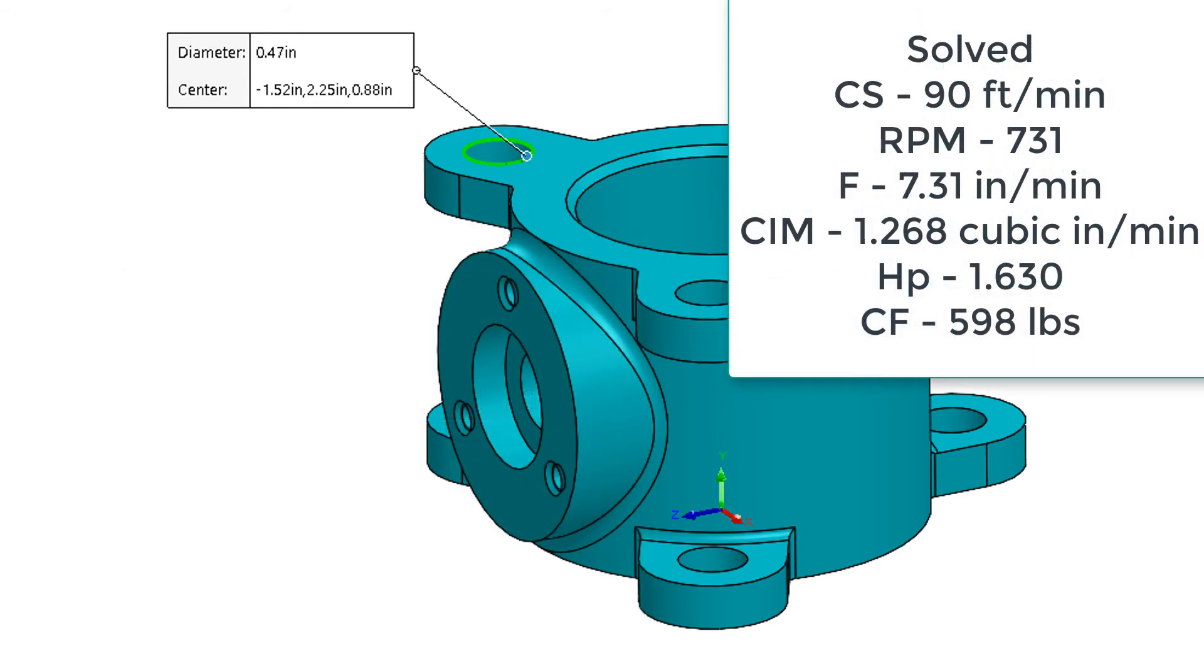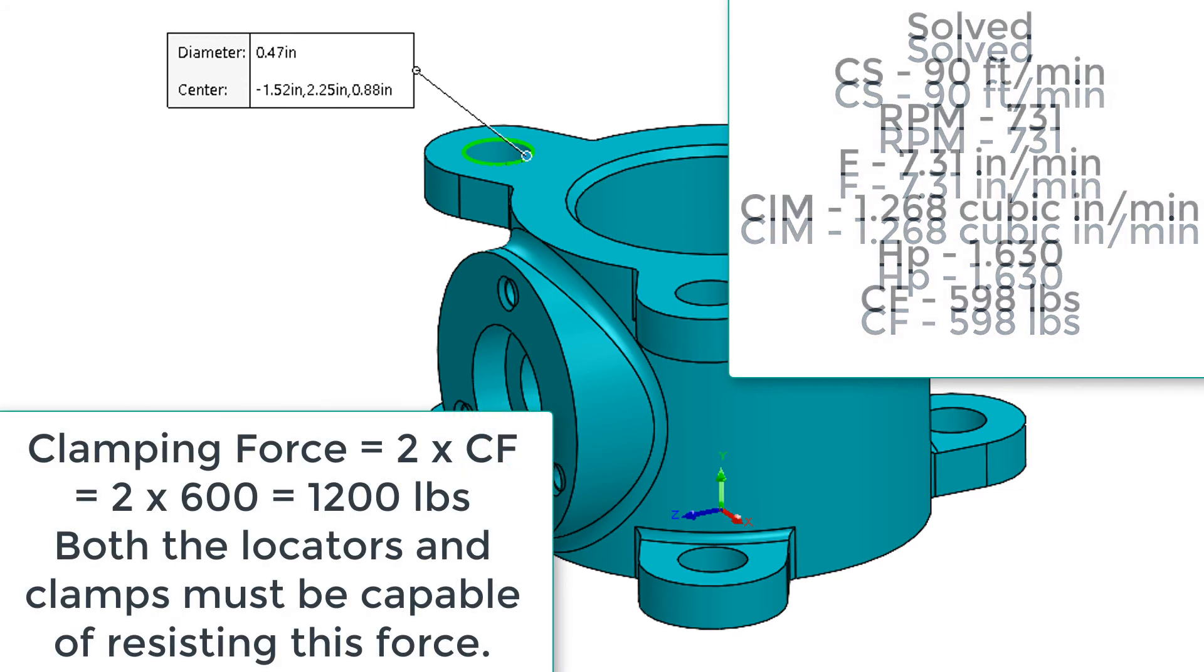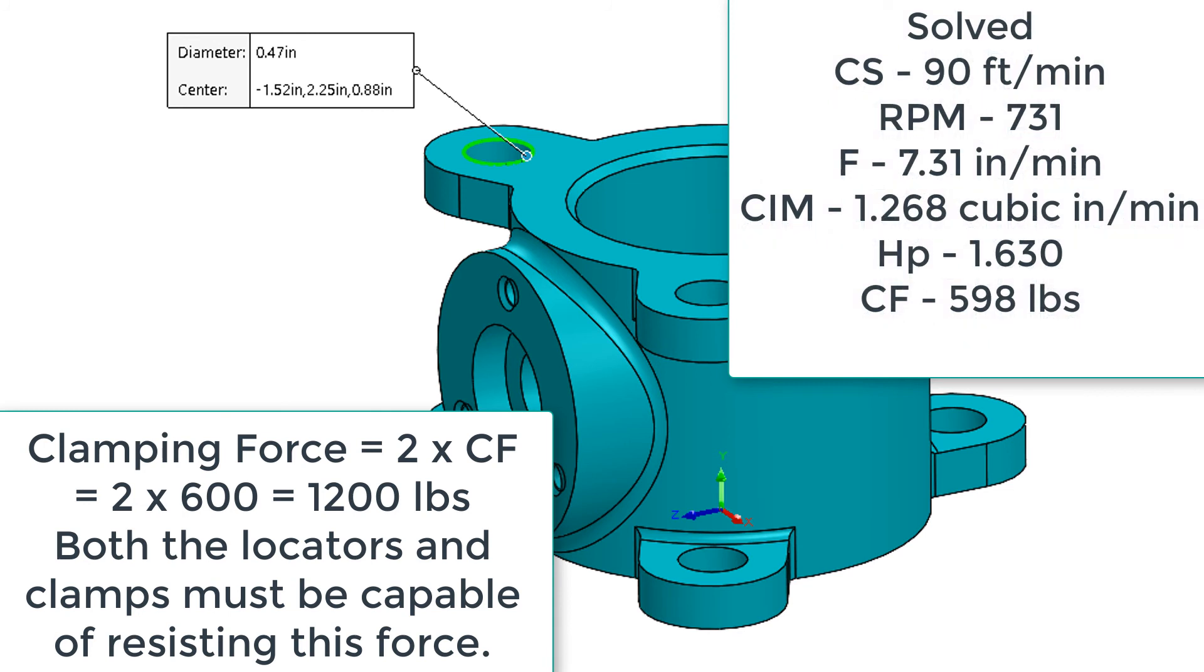Now that we know using our cutting parameters that one drill will exert a cutting force of 598 pounds, I can design my clamps to withstand the roughly 600 pounds of cutting force. The reason for calculating the cutting force is because we're designing a jig or fixture to withstand the cutting forces.